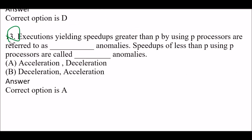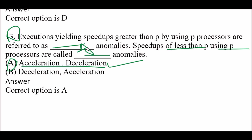Next question: Execution yielding speedups greater than P by using P processors are referred to as blank anomalies; speedups of less than P using P processors are called blank anomalies. Option A: Acceleration and deceleration respectively. Option B: Deceleration and acceleration respectively. The right answer is Option A — acceleration anomalies and deceleration anomalies respectively.